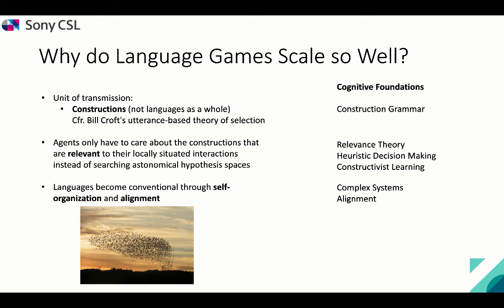The final reason why this works so well is that languages become conventional through self-organization and alignment. We take a lot of inspiration from complex systems — agents try to optimize their communicative success. When they observe a particular construction or word in a successful interaction, they increase their confidence that this is something they could also use when communicating with others. And if everyone does the same kind of adaptation, just like birds form a nice flock or ants form an ant path, spontaneously the population as a whole will converge on a shared language, at least one sufficiently shared that they can all communicate with each other.